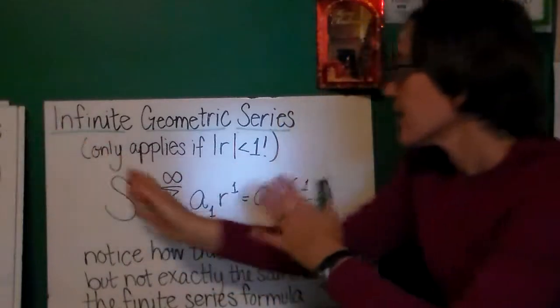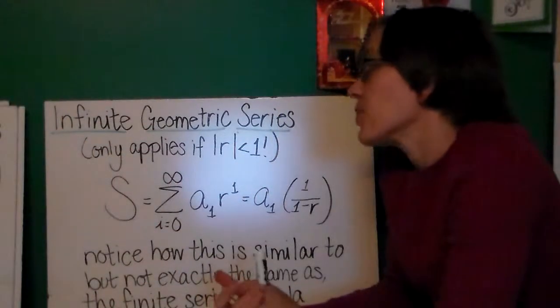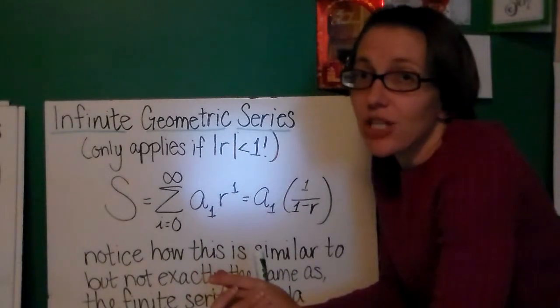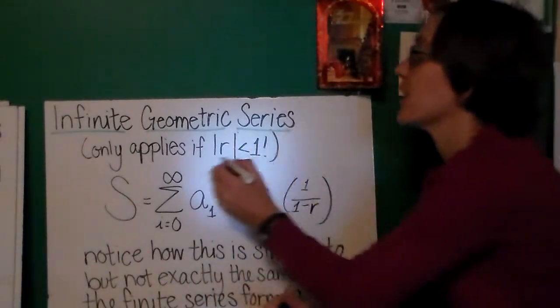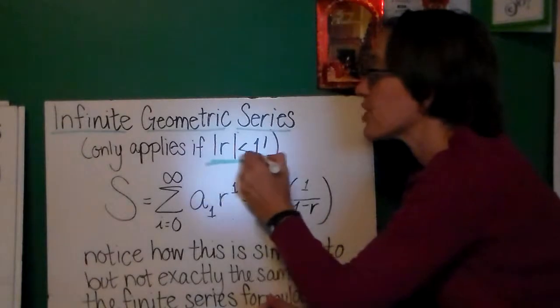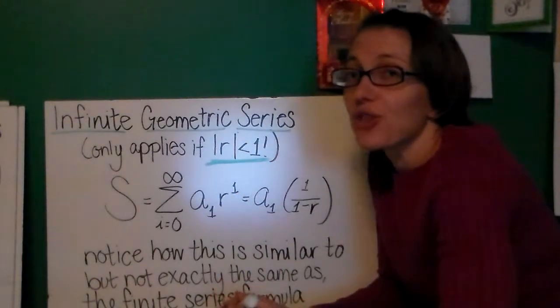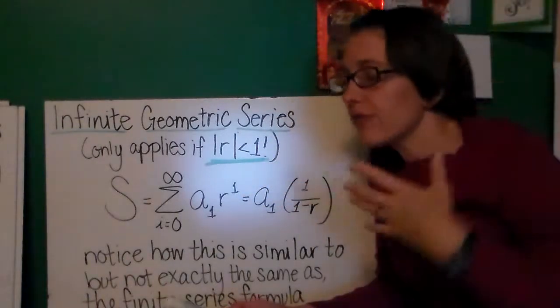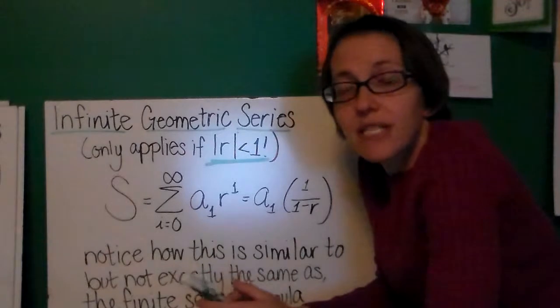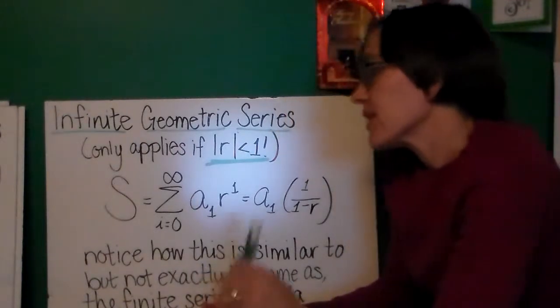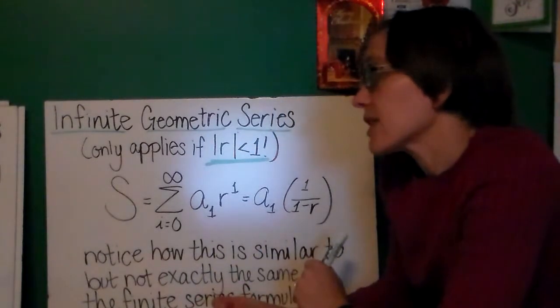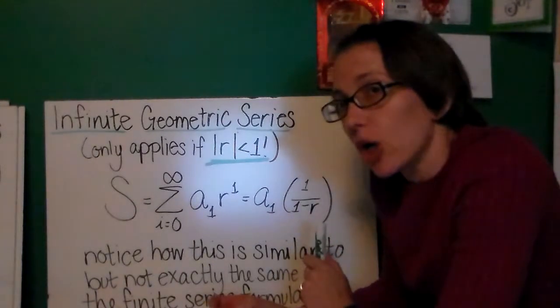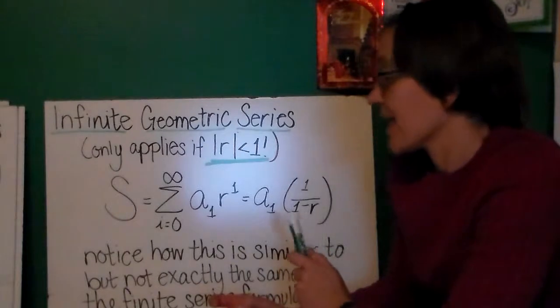So finally, I just want to look at the formula for infinite geometric series. We can only use the formula for infinite geometric series if the absolute value of our ratio is less than 1. If r is greater than 1, our terms are going to be on this exponential curve. If r is going to diverge to infinity for our sum, we're not going to go anywhere.